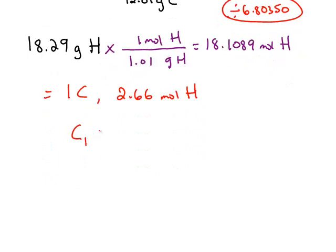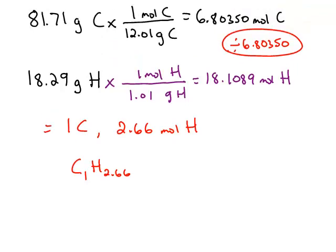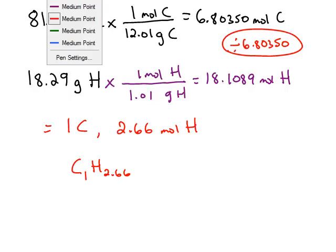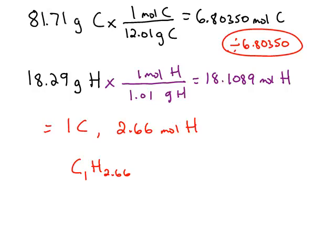Or if we write that as a formula, it would be C with a subscript 1, H with a subscript of 2.66. We've kept the ratio between the numbers the same, but now we've almost got them into small whole numbers. 2.66 is too far away to round that to a 3, and 2.66, if you remember your fractions, that's basically 2 and 2/3 or 8/3.